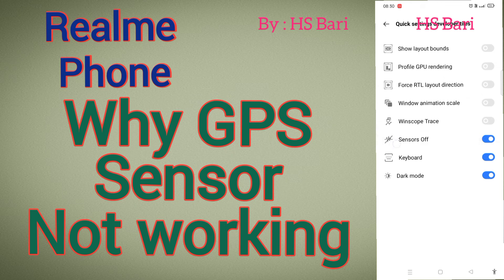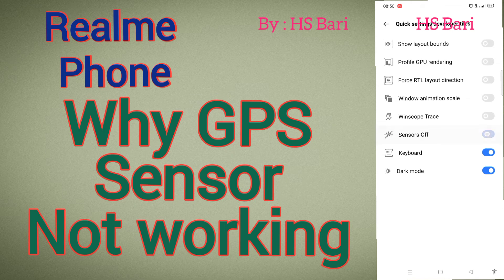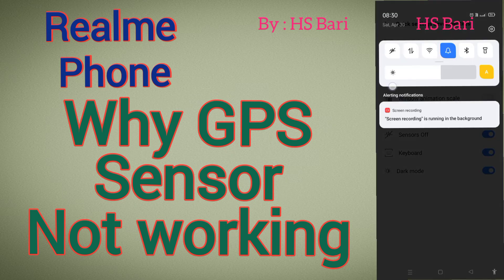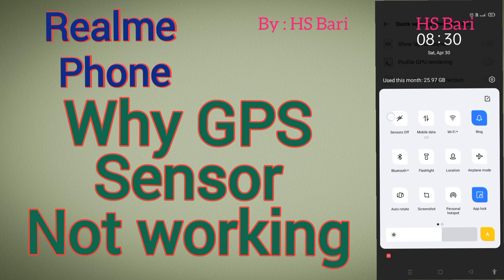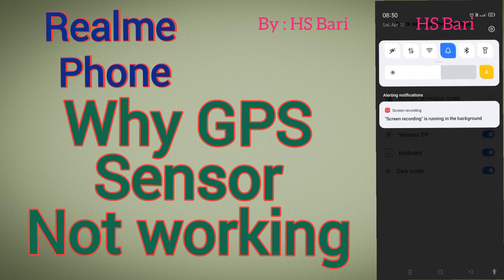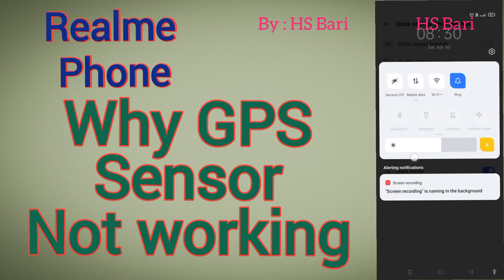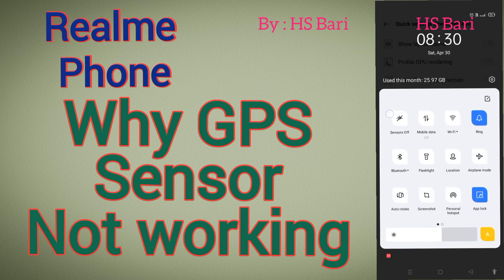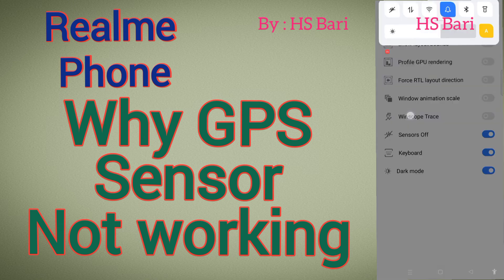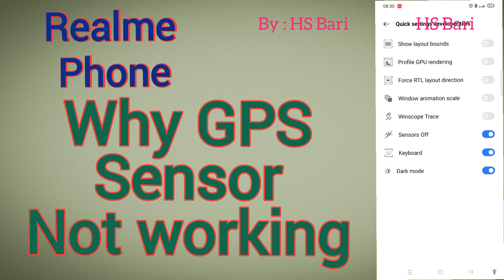Here you will get the sensor on/off button — enable it from here. After that you will get the sensor on/off button in your quick settings. By enabling the sensor on/off toggle, your sensors will get refreshed and your GPS problem should be solved. Hope this video is helpful for you — if it is, don't forget to subscribe. Thanks for watching, bye bye.